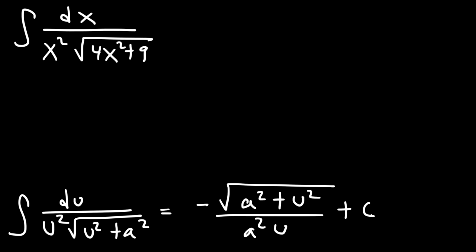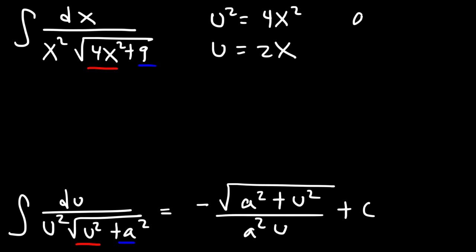We need to identify the values of u and a. Notice that u squared is 4x squared and a squared is 9. So if u squared is 4x squared, u is the square root of 4x squared, which is 2x. And if a squared is 9, a is the square root of 9, which is 3. Since u is 2x, du is 2 times dx. So du does not equal dx in this problem.